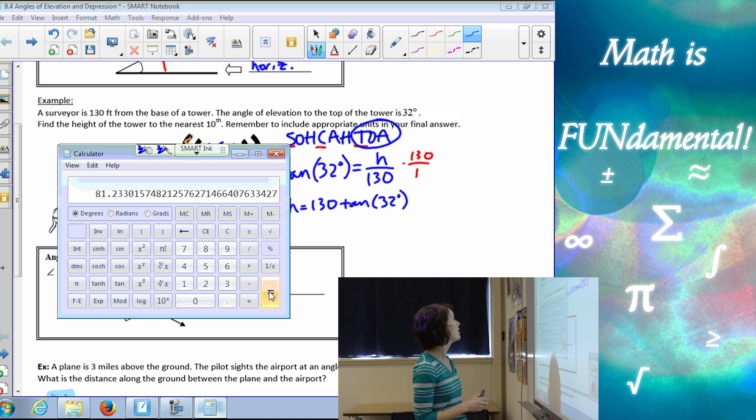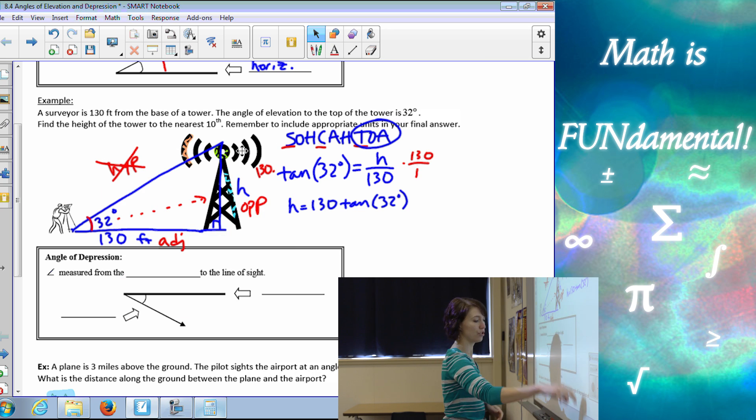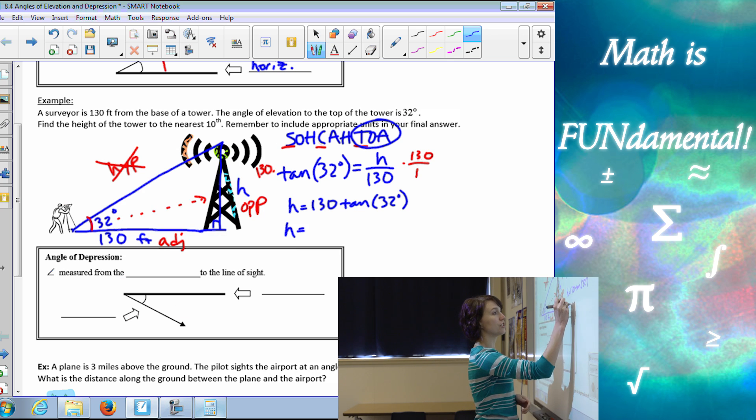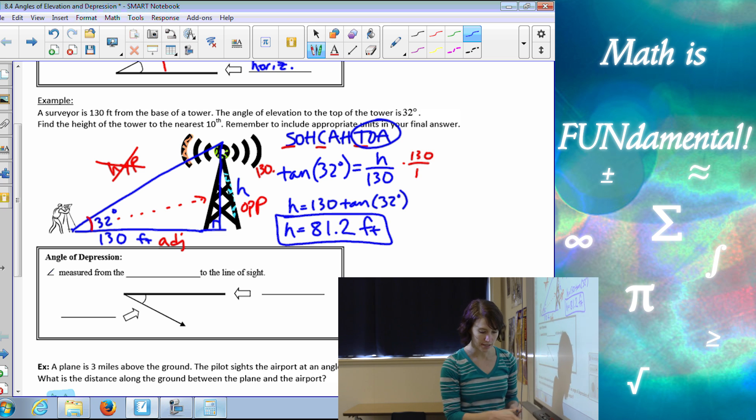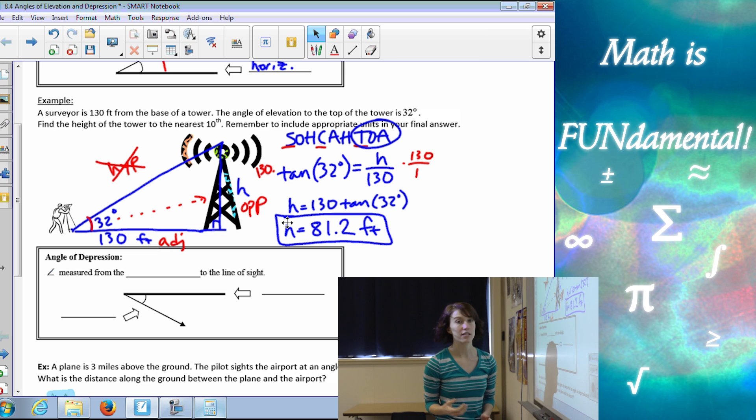Alright, and then we want to round to the nearest tenth, so that makes 81.2. So H is 81.2, and then our units are feet. Alright, so there is our first example.